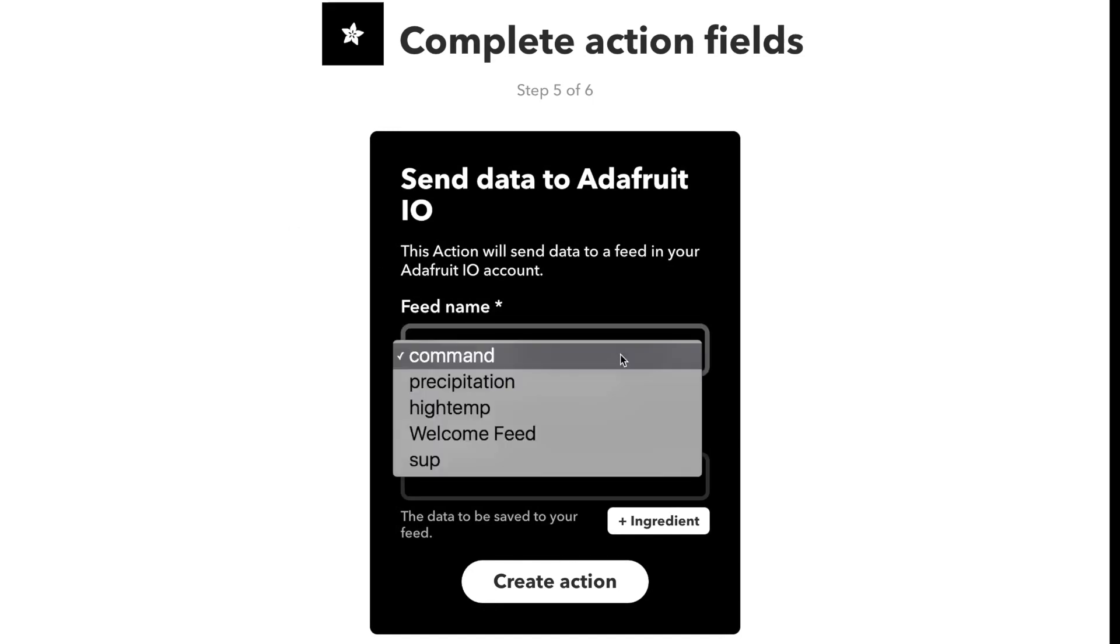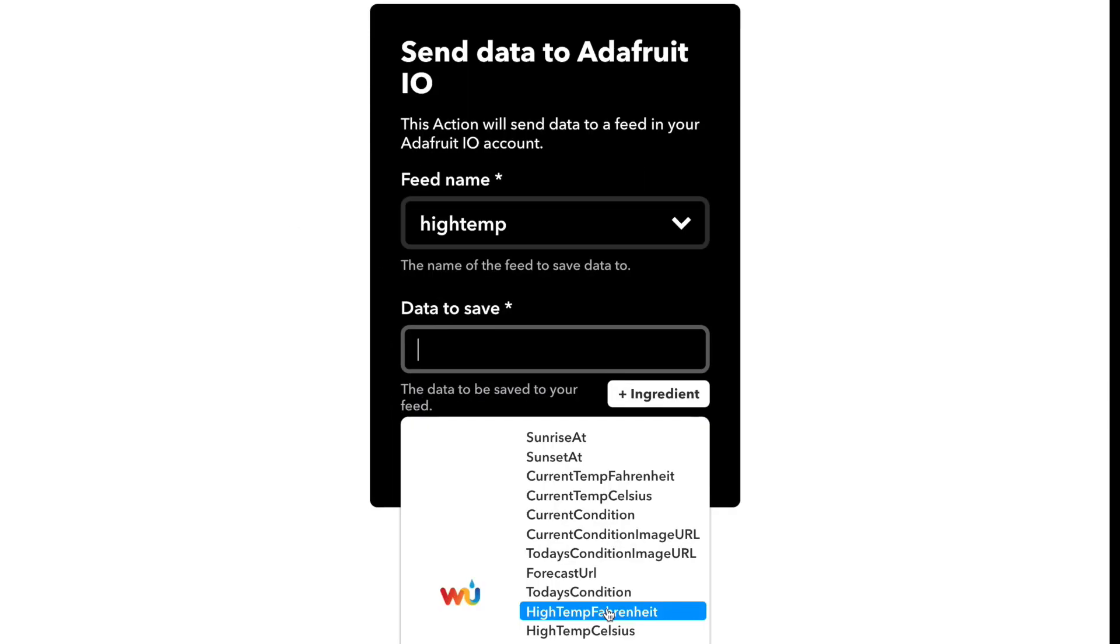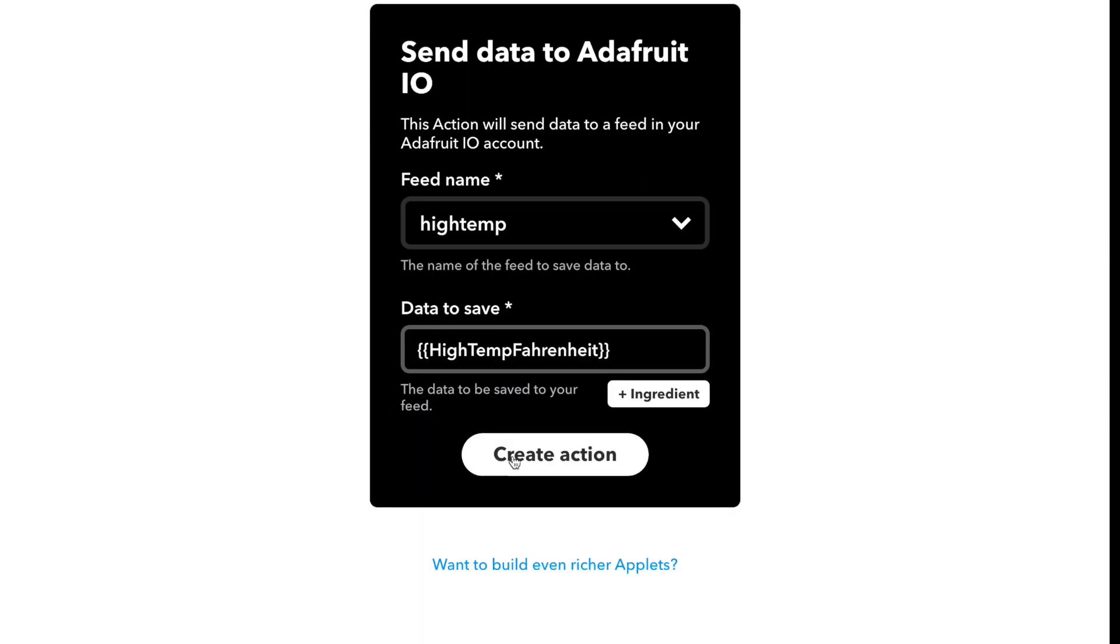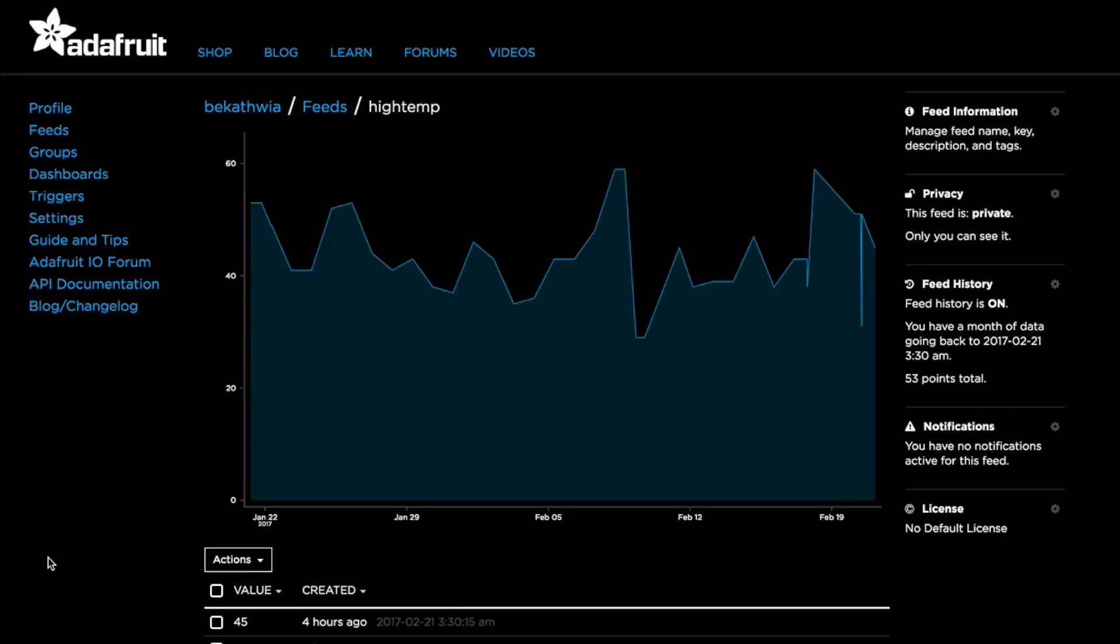The condition and weather data are tracked in two feeds on the cloud data service Adafruit I.O., which are continually checked by the Arduino program.